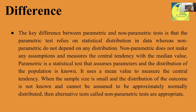The key difference between parametric and non-parametric tests is that the parametric test relies on statistical distribution in data, whereas non-parametric tests do not depend on any distribution. Non-parametric does not make any assumptions and measures the central tendency with the median value, while parametric assumes parameters and that the distribution of the population is known, using the mean value. When the sample size is small and the distribution is not known or cannot be assumed to be approximately normally distributed, non-parametric tests are appropriate.